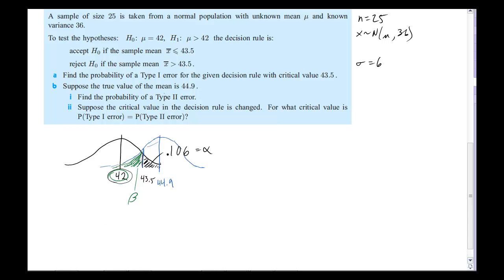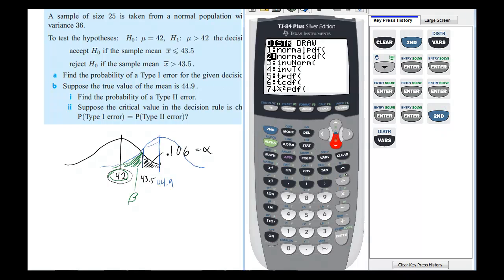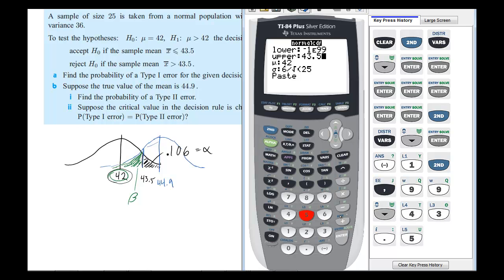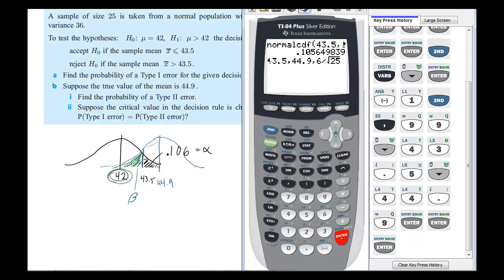Alright, so that shouldn't be too difficult. Again, we're just looking for a probability, an area. So we're going to go back into normal CDF. This time, the lower is going to be negative 1E99 because we want to start all the way down here. Then we'll go up to 43.5. Our real mean is 44.9 here, and the standard deviation is the same. We'll take that and run with it, and we'll get that β is 0.122.